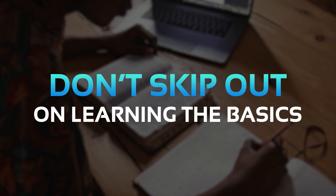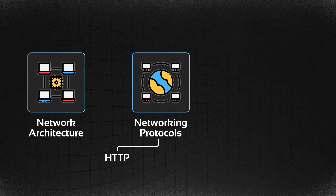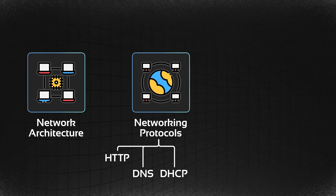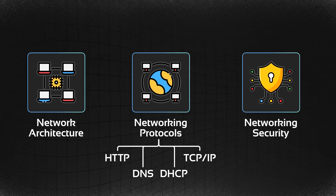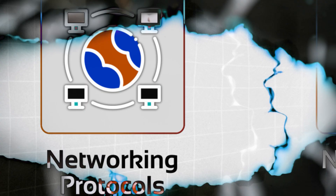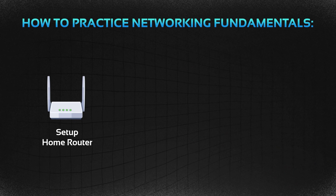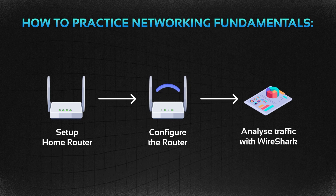Don't skip out on learning the basics. Networking fundamentals — next, move on to understanding the fundamentals of networking. At the very minimum it's crucial to understand network architecture, networking protocols such as HTTP, DNS, DHCP, TCP/IP, and some networking security such as firewalls and VPNs. Networking is crucial as you need to understand how applications and systems talk to each other and connect. Network architecture is also a common responsibility as a DevOps engineer. Practice networking basics by setting up a home router, configuring it, and analyzing traffic with tools such as Wireshark.